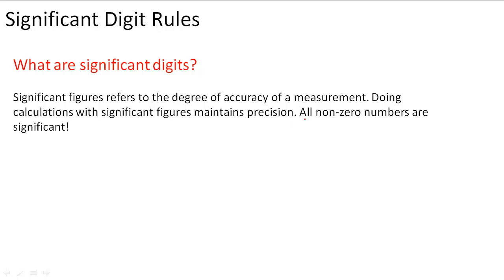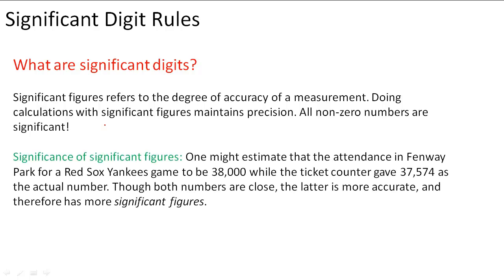The first rule is that all non-zero digit numbers are significant. So 1, 2, 3, 4, 5, 6, 7, 8, and 9 are all significant digits. So let's talk about the significance of significant figures.